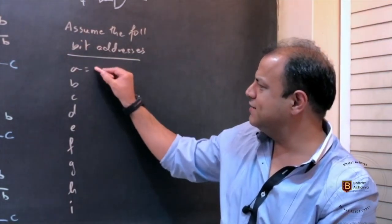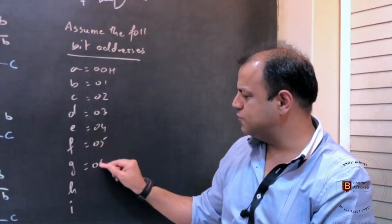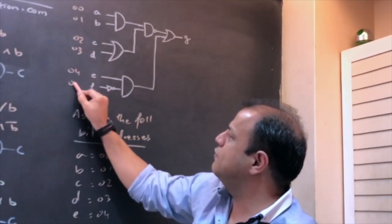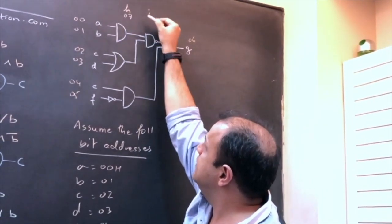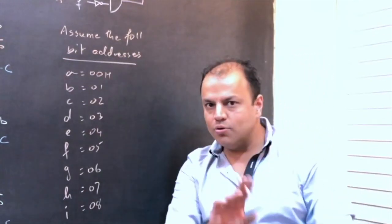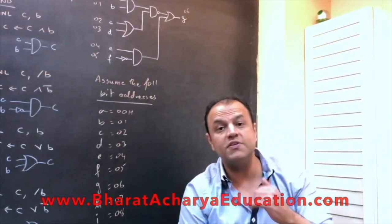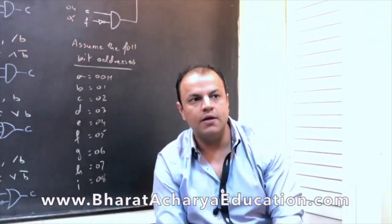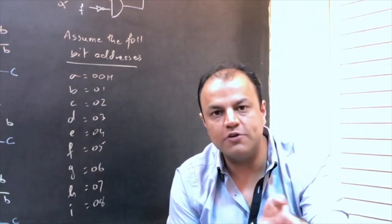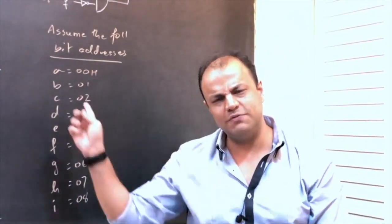What have I assumed? Not their values — I have assumed addresses. You are not allowed to assume values. If I knew the values of A, B, C, D, E, F, I wouldn't need a program. Our program will work for any value of these bits. Like when you write a program to add two numbers, you assume those numbers are stored at some location — you assume addresses, not values. Bit addresses go from 00 to 7F, so any number from 00 to 7F is a valid address to assume.